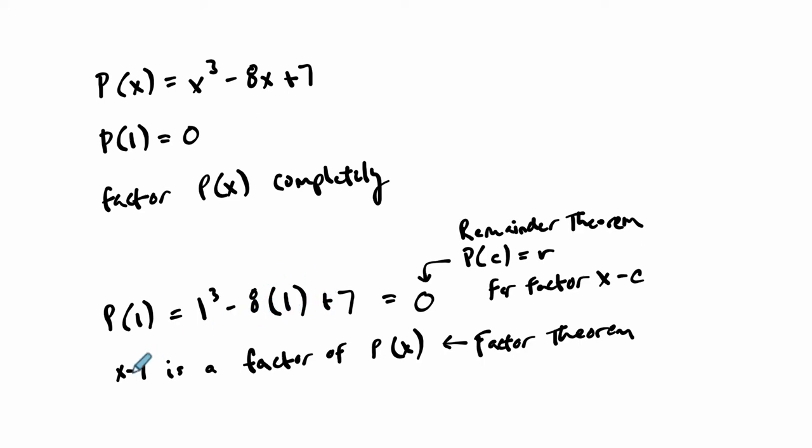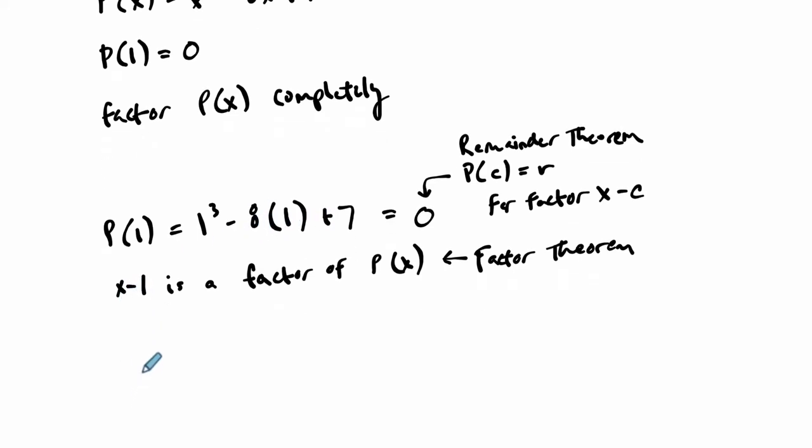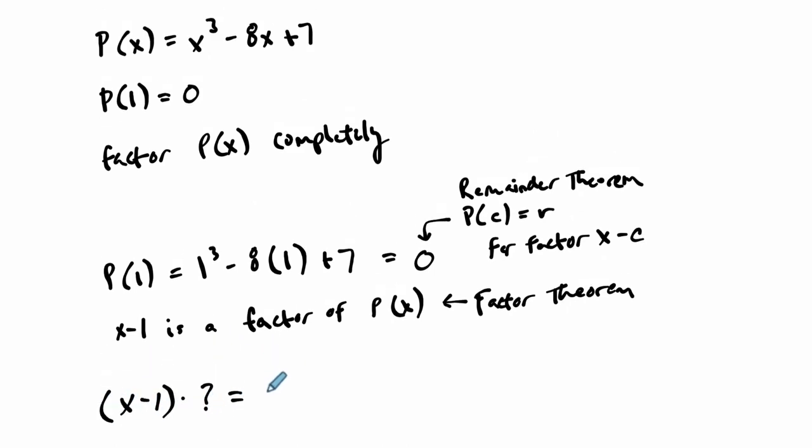So what does that mean? Well, if that's a factor of it, we know X minus 1 times something has to equal our polynomial, the X cubed minus 8X plus 7.